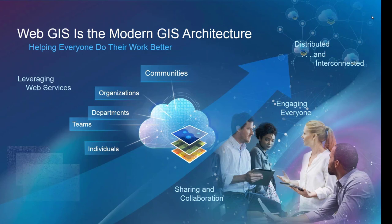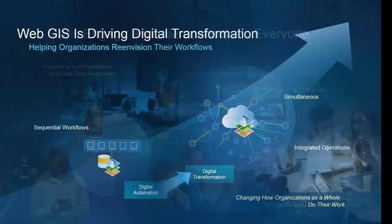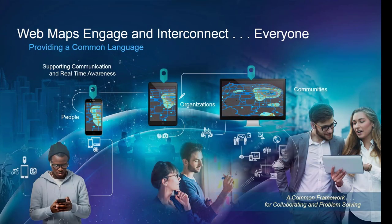This technology is driving major aspects of digital transformation in cadastral and valuation organizations. Web GIS is driving this digital transformation by helping organizations re-envision their workflows — moving from sequential workflows, a first-generation digital transformation, to simultaneous workflows with integrated operations. With different parts of an organization sharing common information and workflows all at the same time, it fundamentally changes how land administration organizations do their work. These web maps engage and interconnect everyone, with billions being produced every day, becoming a language and tool for problem-solving.